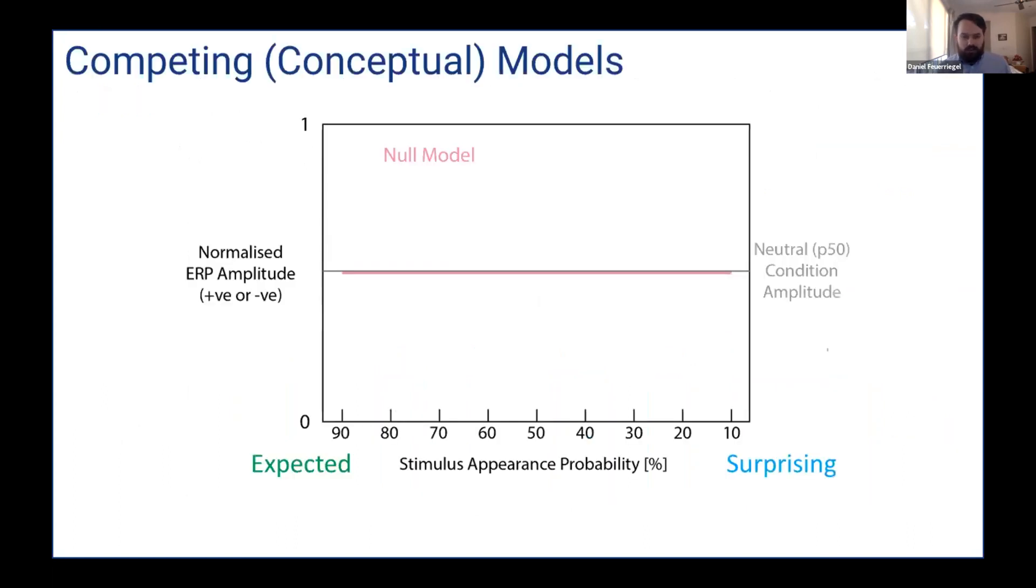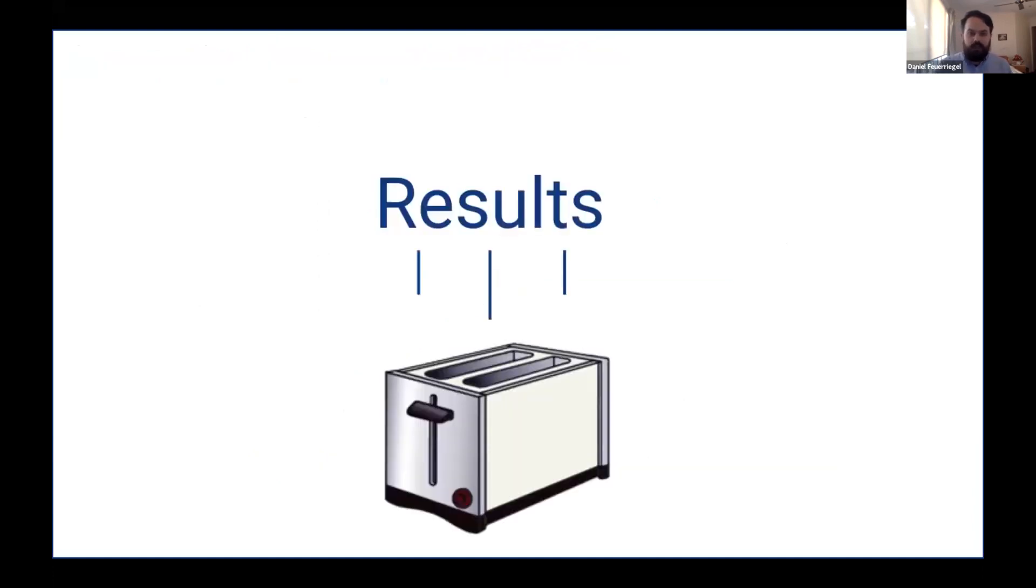Okay. So there are a number of different outcomes we could expect. So we have the different probability conditions at the bottom and then some sort of normalized amplitude on the y-axis. First, there was the null model, which we hoped wouldn't happen because that would be quite boring. Then we had the expectation only model where expected stimuli had a dampened response compared to the 50% neutral and the surprising conditions. A graded version of this, where the stimulus probability sort of had a gradual proportional effect on this. A surprise only condition where the neutral and expectation expected conditions were quite similar and there was an effect of surprise. A graded version of this. And then of course, a combination of expectation and surprise effects.